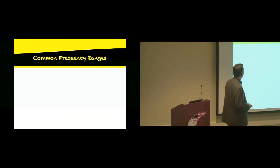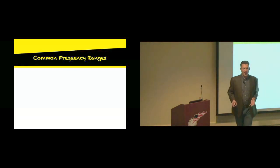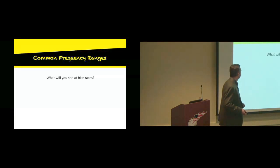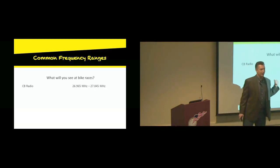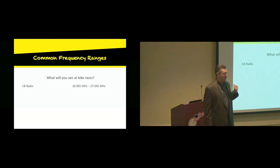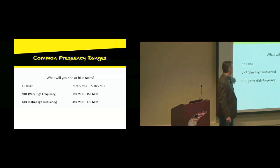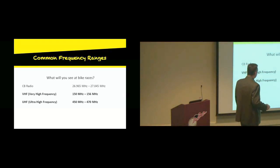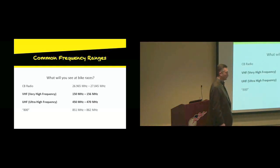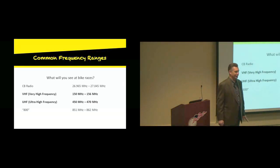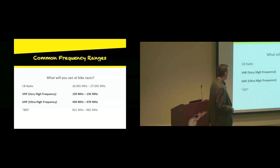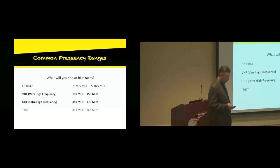We're getting out of theory now and getting into practicality. Going to a bike race, there are some common types of radios you're going to encounter. CB radio — if your race director says we're using CBs, run screaming the other way, all I got to say. The two you're going to see most are VHF and UHF radios at events, and these are the frequency ranges they're in. Some events use what's called an 800 system — very proprietary, police-type radios. But for most intents and purposes you guys will be working with VHF and UHF.